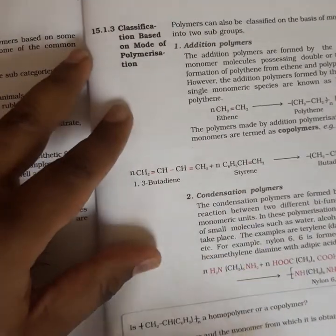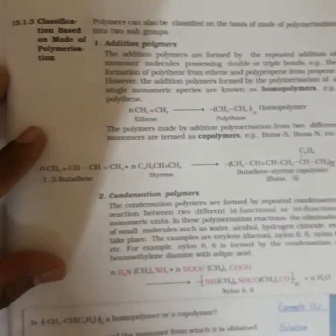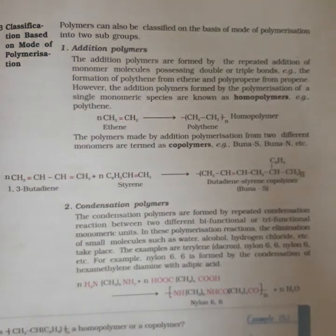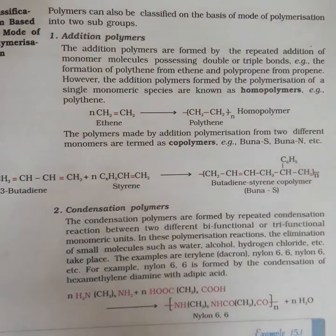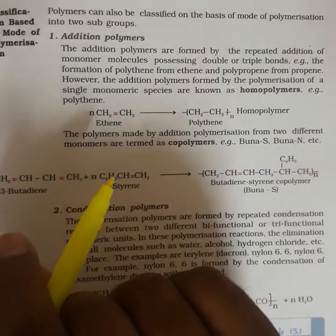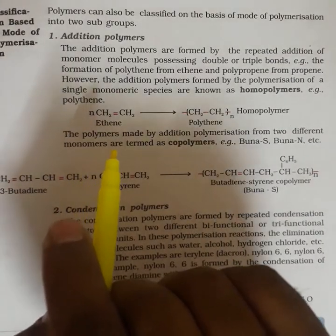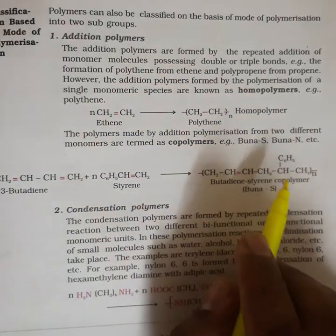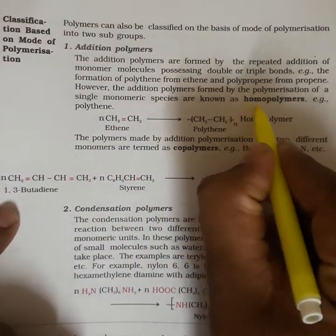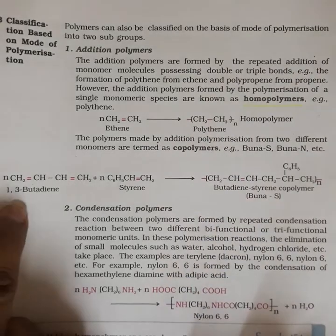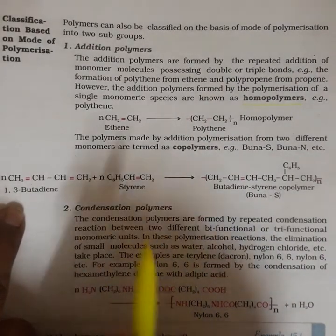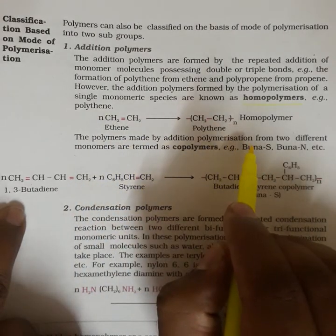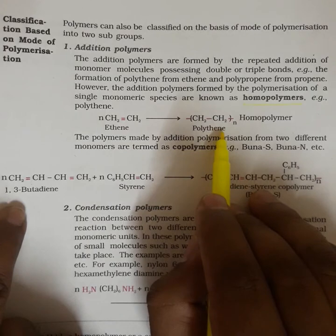The third classification is addition polymers and condensation polymers. Addition polymers are those in which monomer units consist of pi bonds. When such monomer units repeat many times, they are called addition polymers or homopolymers, because the same type of monomer units are repeated. For example, ethene on polymerization gives polyethene.